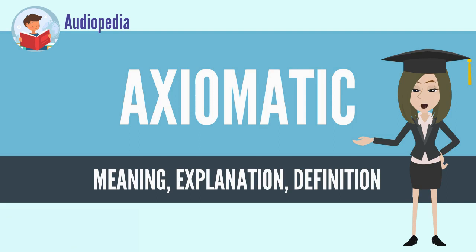An axiomatic system that is completely described is a special kind of formal system. The formal theory typically means an axiomatic system, for example formulated within model theory. The formal proof is a complete rendition of a mathematical proof within a formal system.